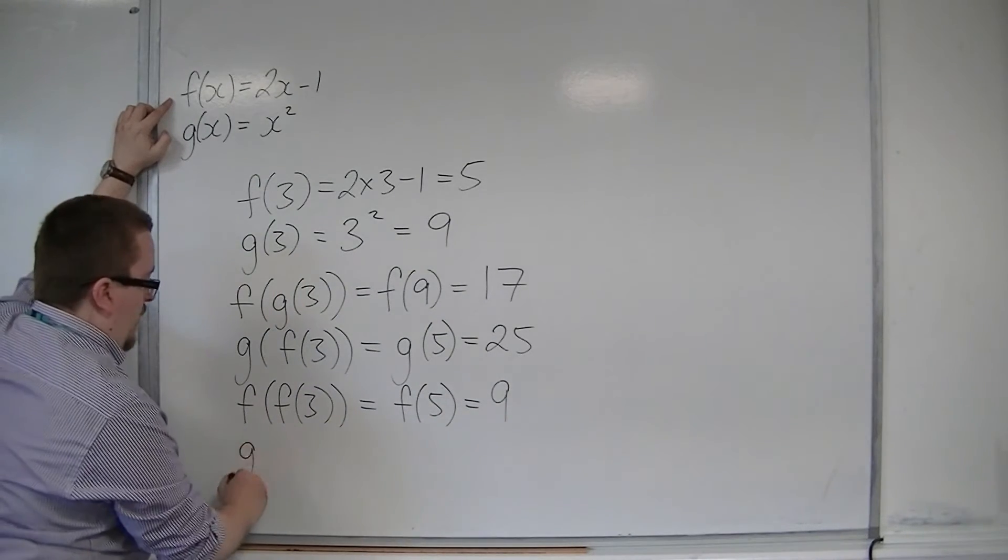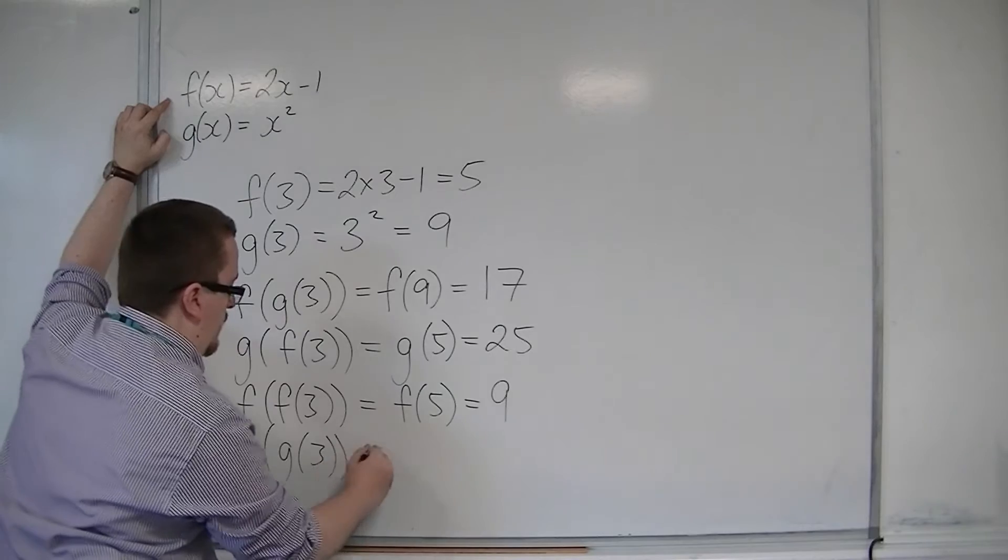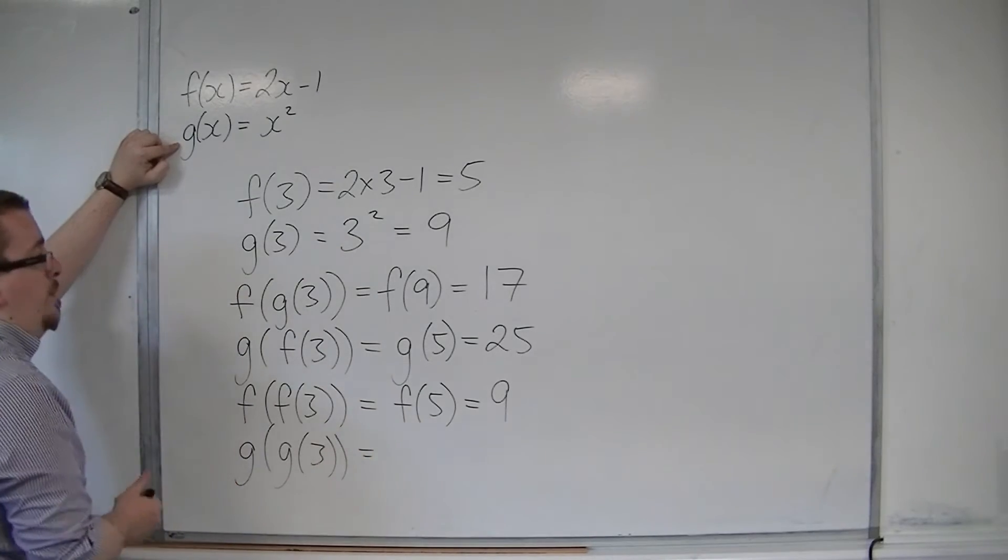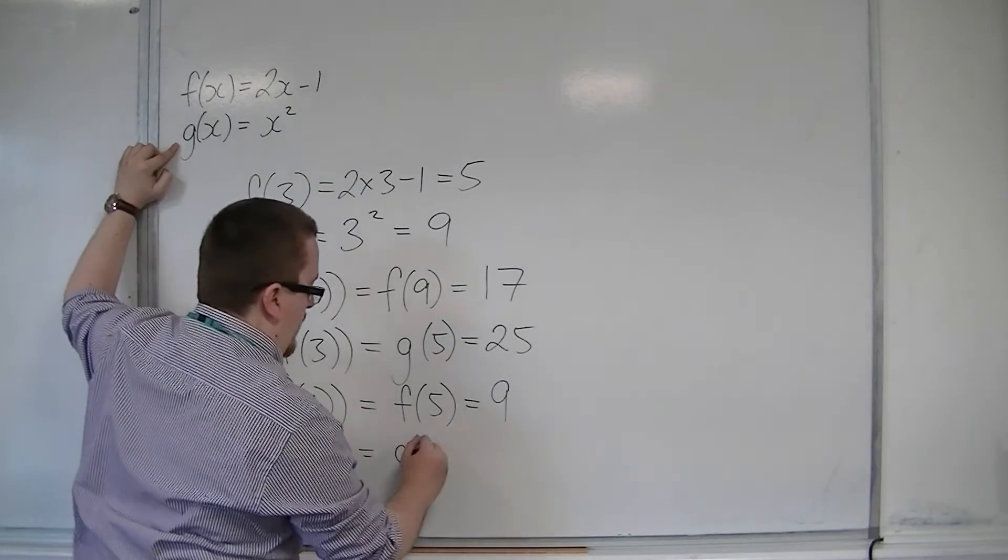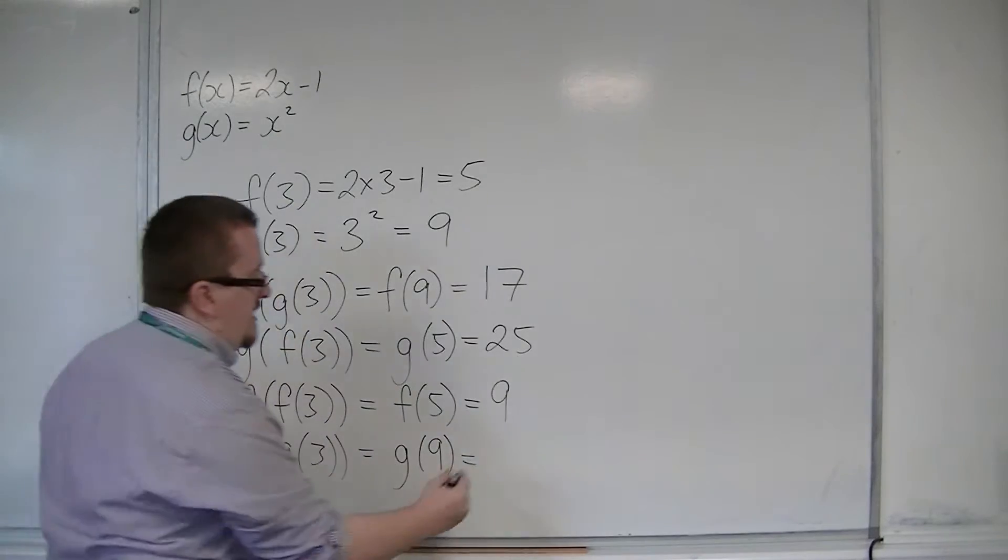I could also work out g of g of 3. So g of 3 was 9, so that's g of 9, and 9 squared is 81.